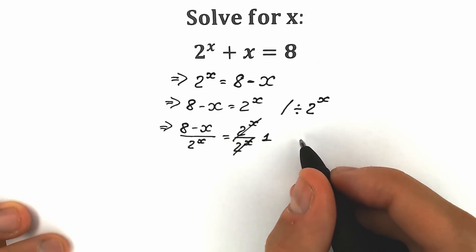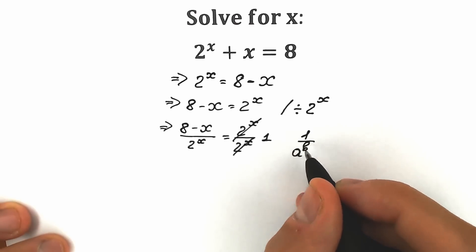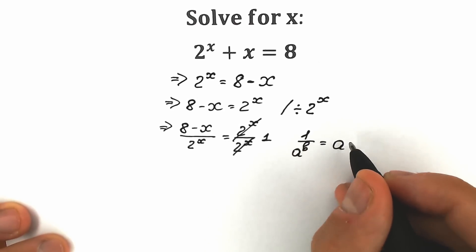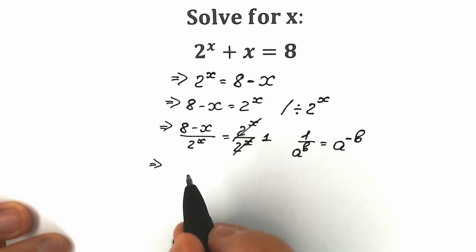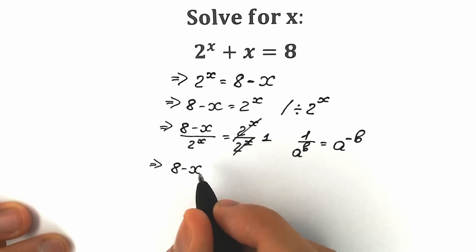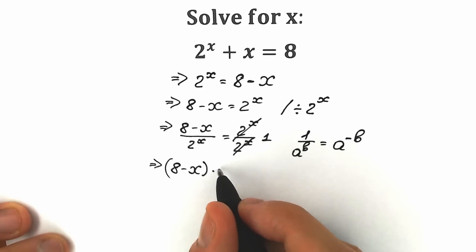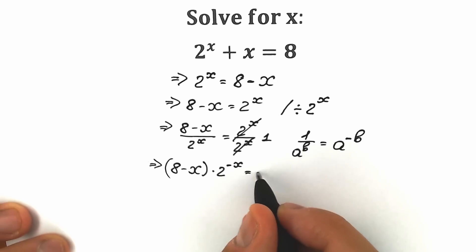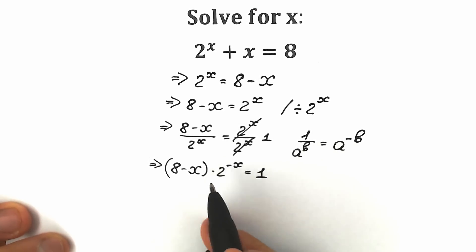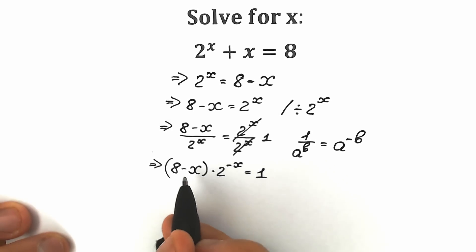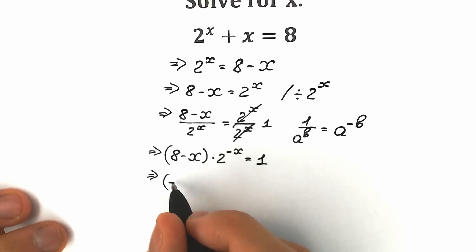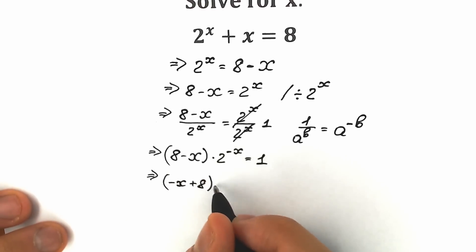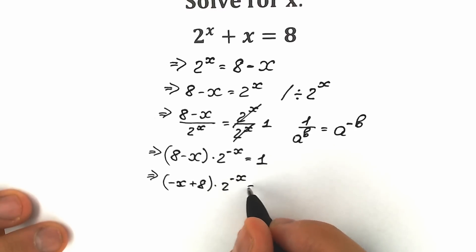I hope you know a really great property: when we have 1 divided by 8 to the power b, and we bring it from the denominator to the numerator, we get 8 to the power minus b. Applying this property, we have 8 minus x — or written as minus x plus 8 — times 2 to the power minus x equal to 1.